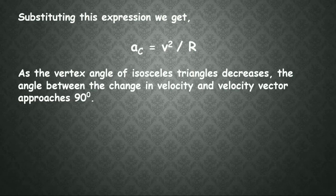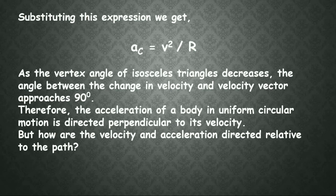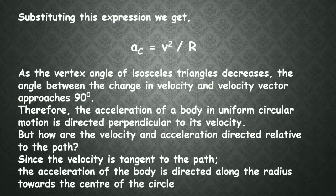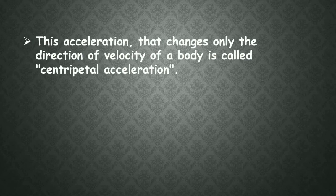As the vertex angle of the isosceles triangle decreases, the angle between the change in velocity and the velocity vector approaches 90 degrees. Therefore, the acceleration of a body in uniform circular motion is directed perpendicular to its velocity — that is, along the tangent. Since the velocity is tangent to the path and the acceleration is directed along the radius towards the center of the circle, this acceleration that changes only the direction of velocity is called centripetal acceleration. This acceleration changes only direction, not the magnitude of velocity.